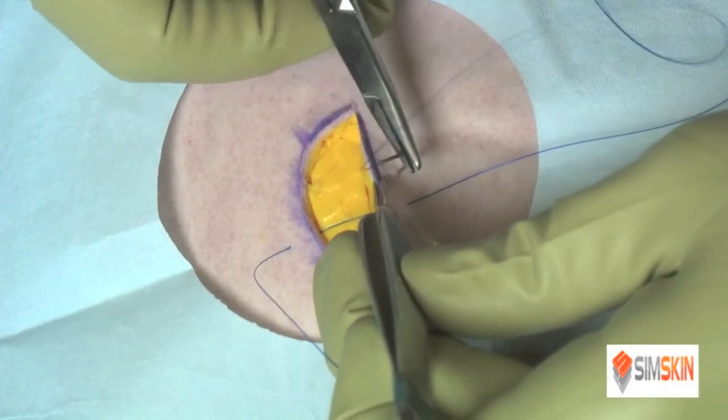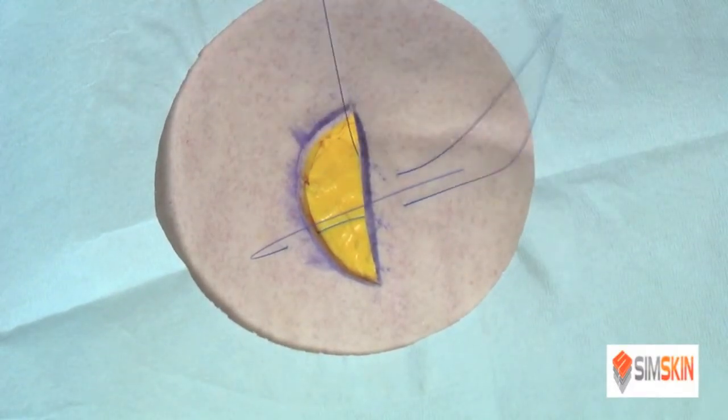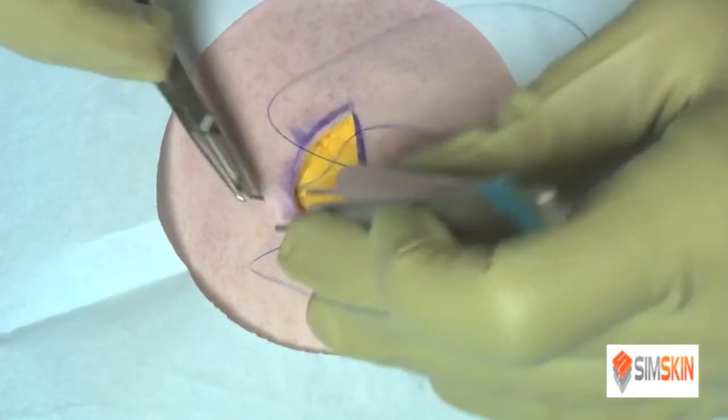It's set up very similarly to a horizontal mattress suture, just as you see here. Superficial to deep, go horizontally, and then go superficial to deep once again. But the critical step is coming up right here.